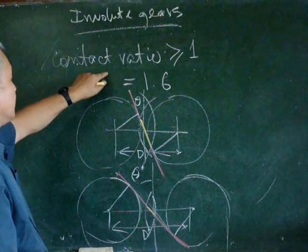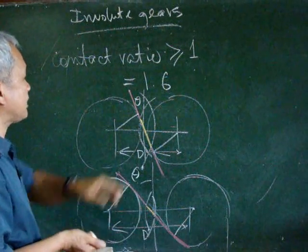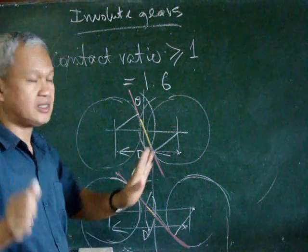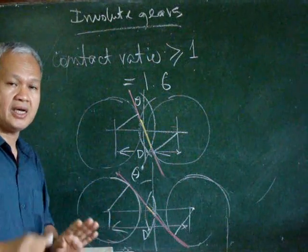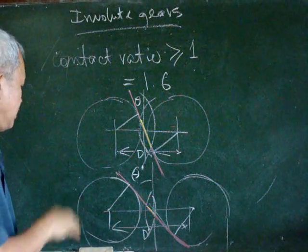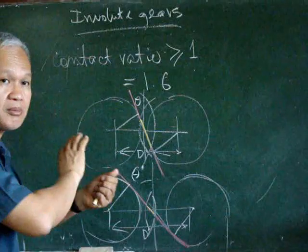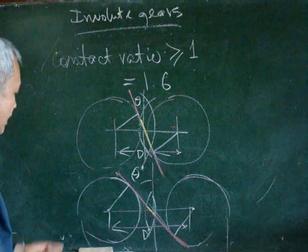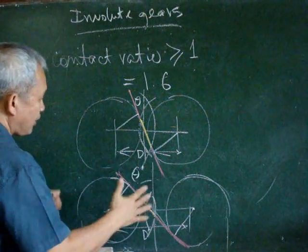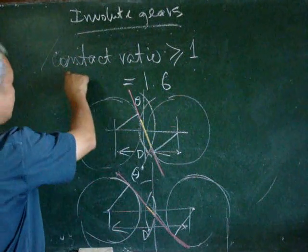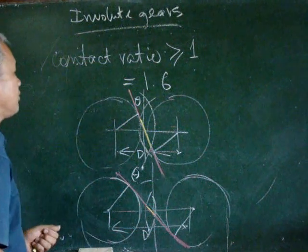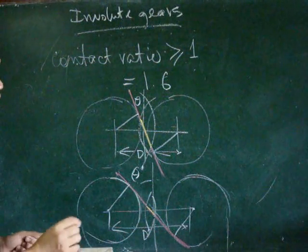And when we compute for the contact ratio, if it is less than one, then we are not satisfied with the fundamental of gearing, and it is not a very good idea to move them away from each other at such a distance. So we have to have the limit. And that limit is the contact ratio that must be equal to or greater than one.